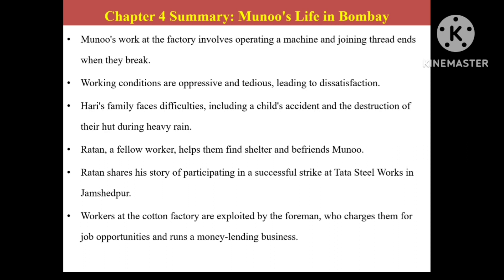Ratan had taken Harihar's family to his chawl because during the rainy season his hut was destroyed by water. But he did not inform the supervisors. Therefore the supervisor became very angry at Ratan and started torturing Harihar as well for not informing him. Torture started in different ways — working hours were extended and so many restrictions were imposed.